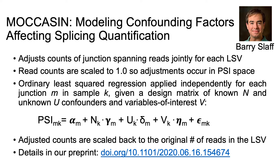MOCCASIN models confounding factors affecting splicing quantification by adjusting counts of junction-spanning reads jointly for each LSV. The read counts are scaled to 1 so that adjustments occur in psi space, and we apply ordinary least squares regression independently for each junction N and each sample K, given a design matrix of known N and unknown U confounders, as well as variables of interest to maintain V. We use surrogate variable analysis to identify unknown confounding factors, in an approach very similar to the one used by Risso et al. in their RUVseq method. Importantly, after computing the adjusted counts, they are scaled back to the original number of reads in the LSV, since we use this read number to measure our confidence in PSI. Please check out our preprint for more details about how MOCCASIN works.